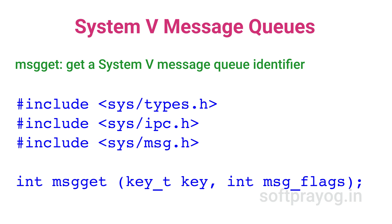The second parameter of msgget is message flags. If you specify IPC_CREAT, the message queue is created. If IPC_EXCL is specified along with IPC_CREAT and the message queue already exists, msgget fails and errno is set to EEXIST. The lowermost 9 bits of the msg_flag are permissions for the message queue, similar to file permissions for owner, group, and the rest. Execute permissions are not meaningful and are not used. On success, msgget returns the message queue identifier.